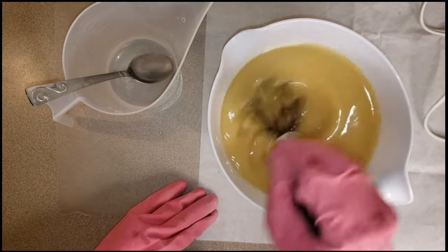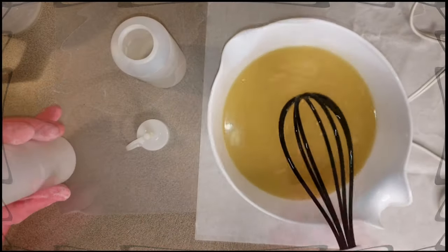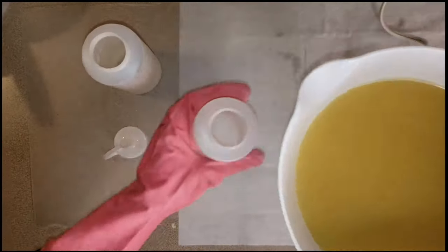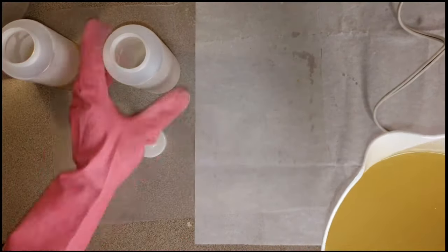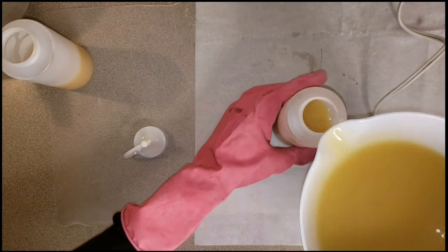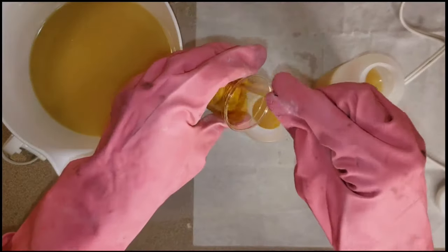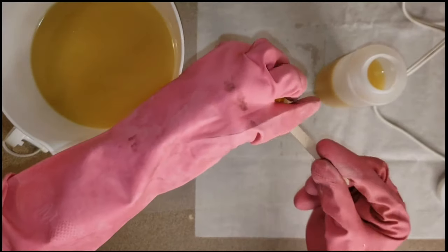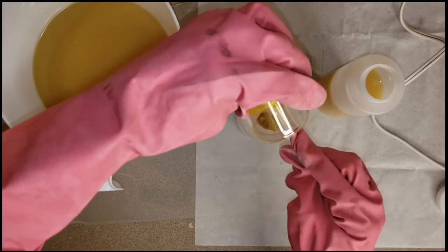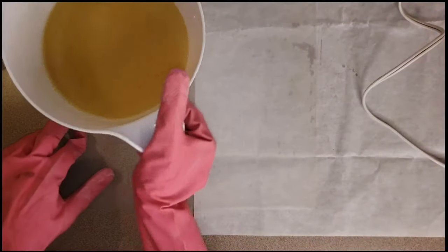Now I'm adding my fragrance. For this design, I am doing the drop swirl technique. Split the soap into three portions. Put it in two different bottles, add the gold mica with turmeric and the green. Shake the bottles and put them aside.